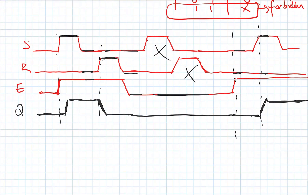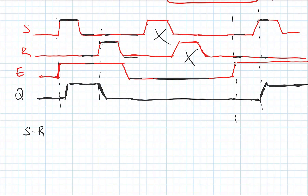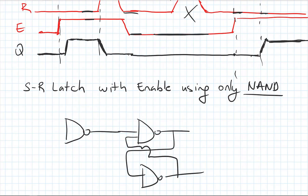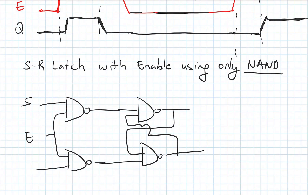We can also design a latch using NAND gates. Let's design an SR latch with enable using NAND gates. In this case I will have NAND gates in my latch — this is the cross-coupled pair. I have another NAND gate here, this will be my enable signal, this will be my S signal, and this will be my R signal. To control this input I need to have a zero here.